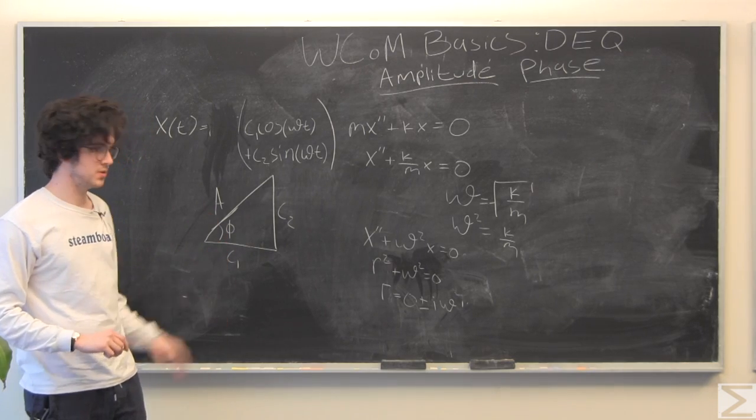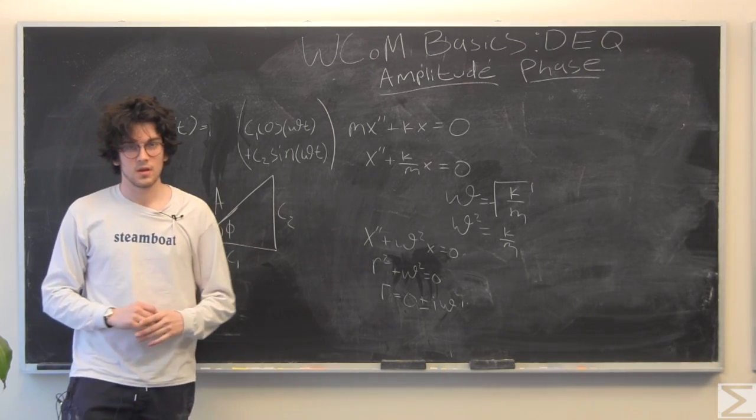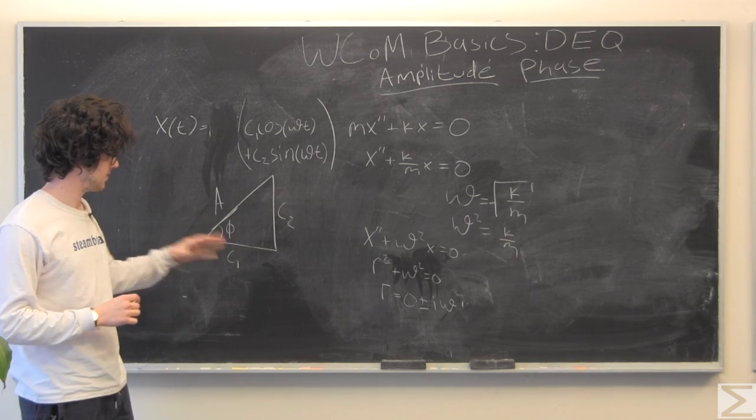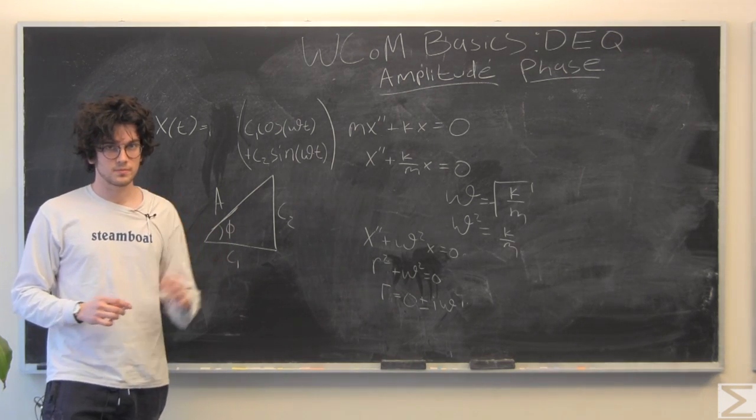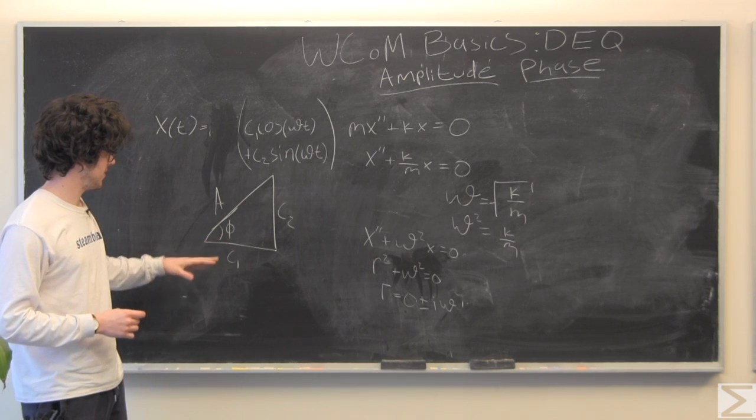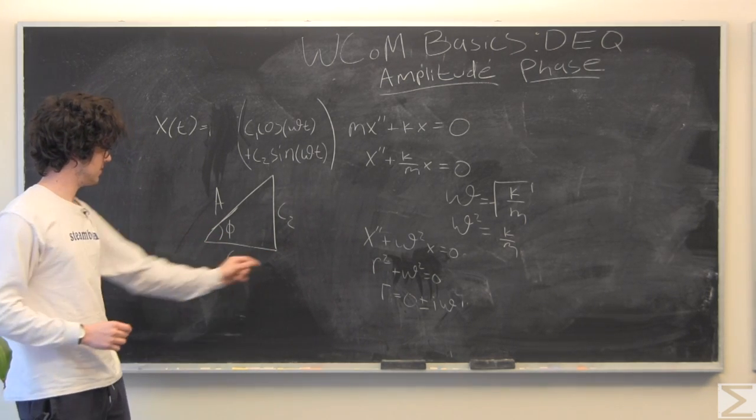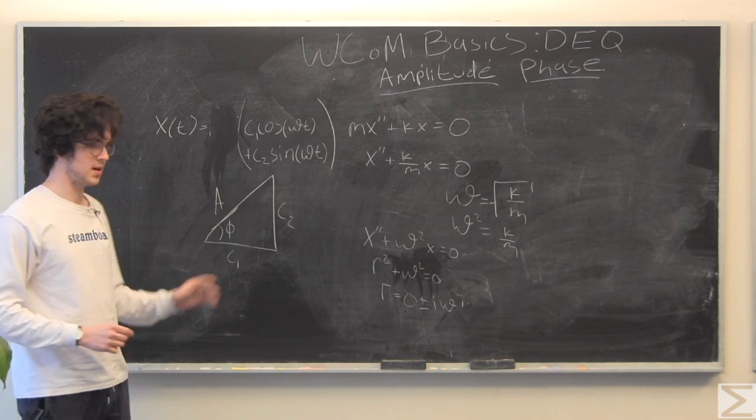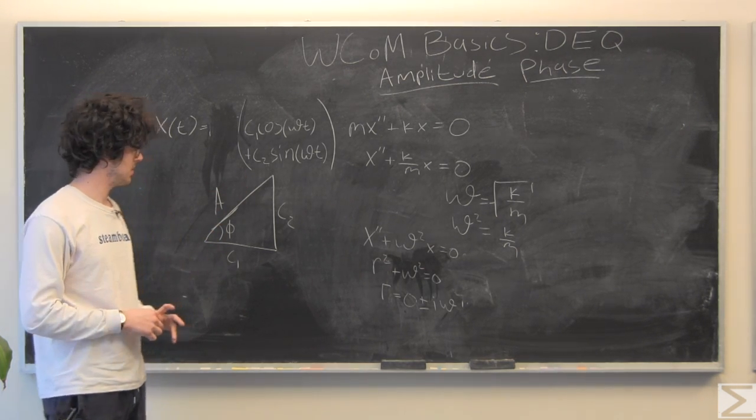We have some amplitude and some angle at which our oscillation is offset by. For example, if phi was zero, our oscillation would just be going back and forth like this. Or, we could have some phase at which our oscillation is happening.